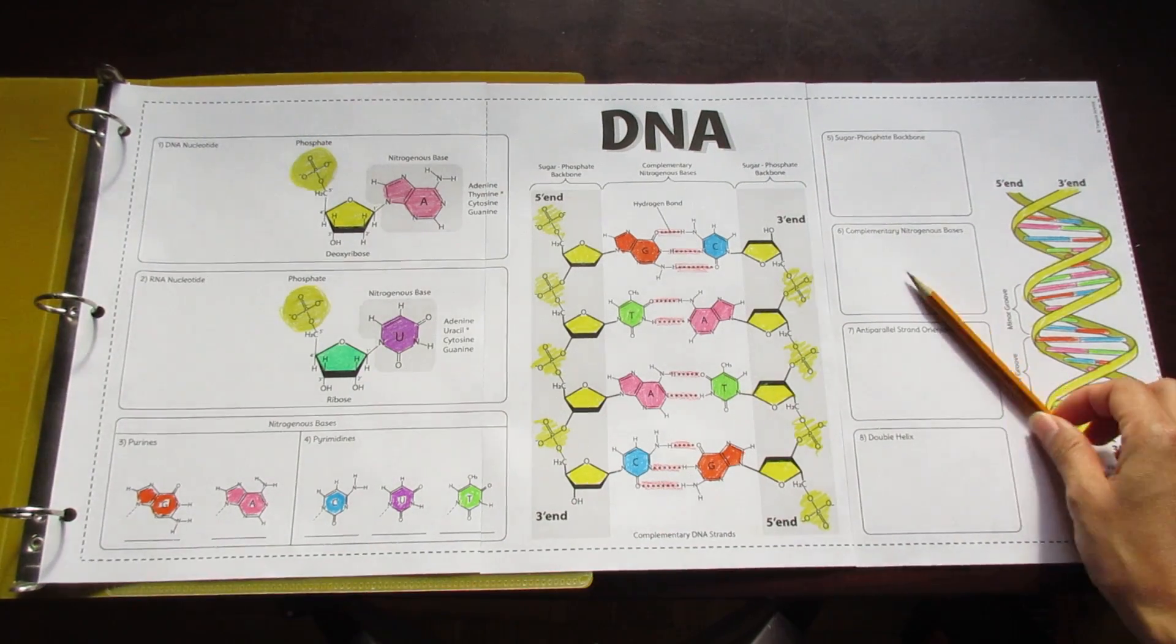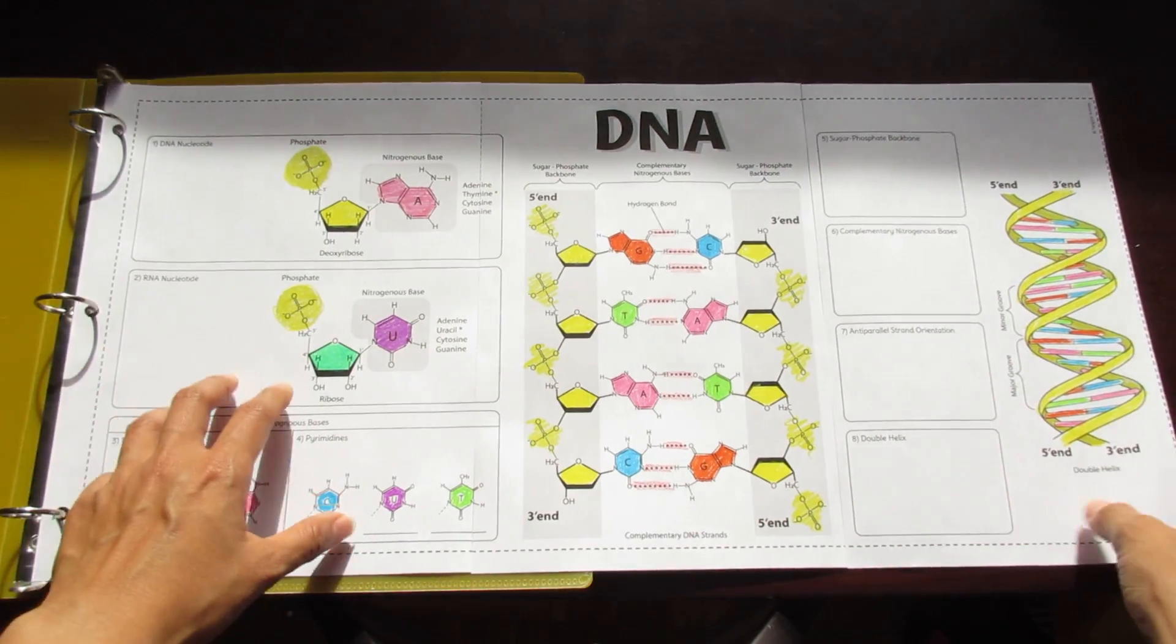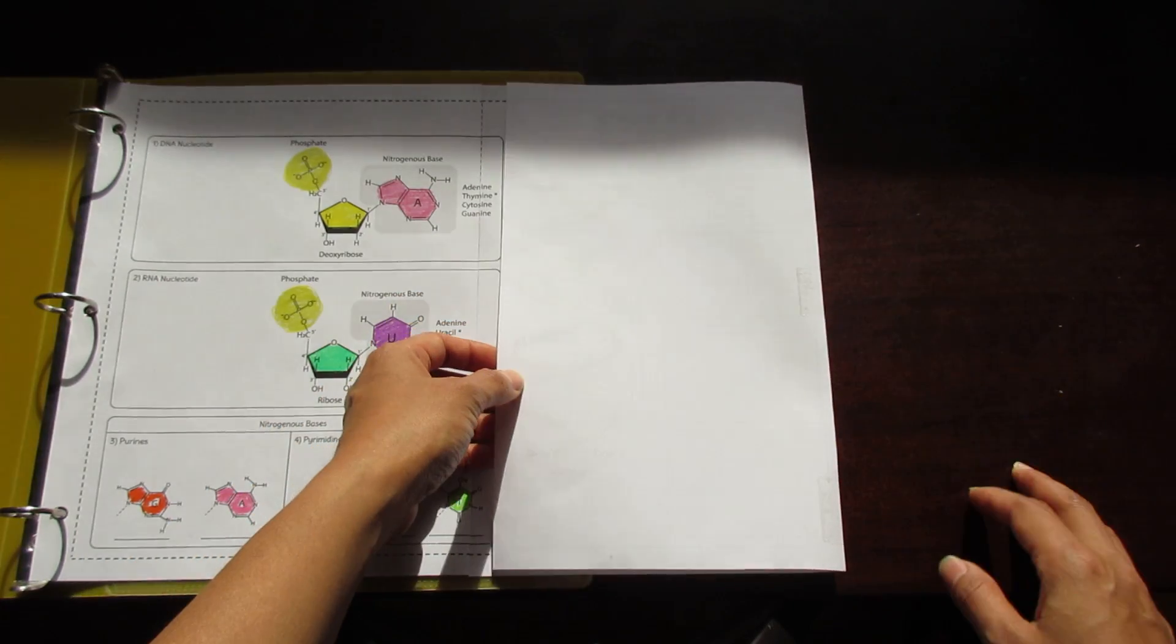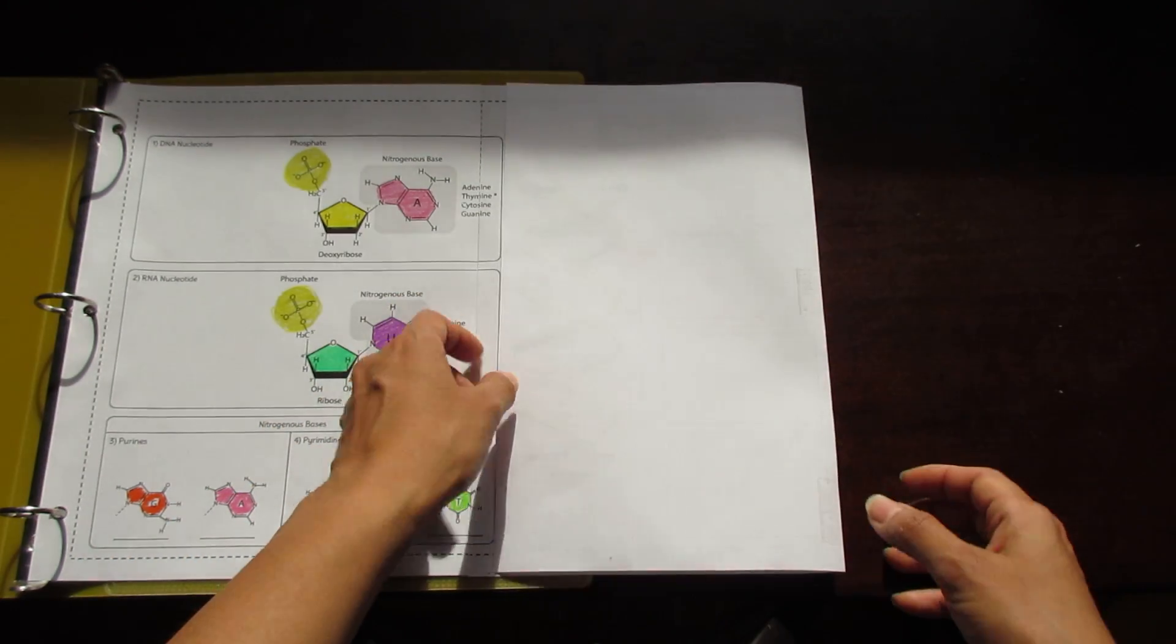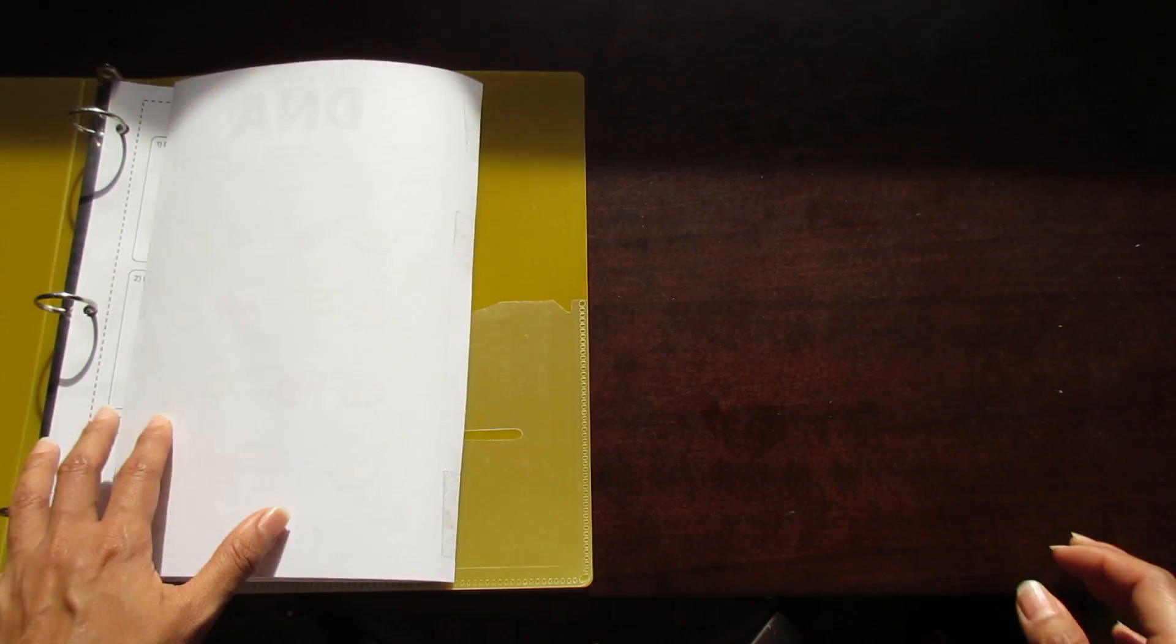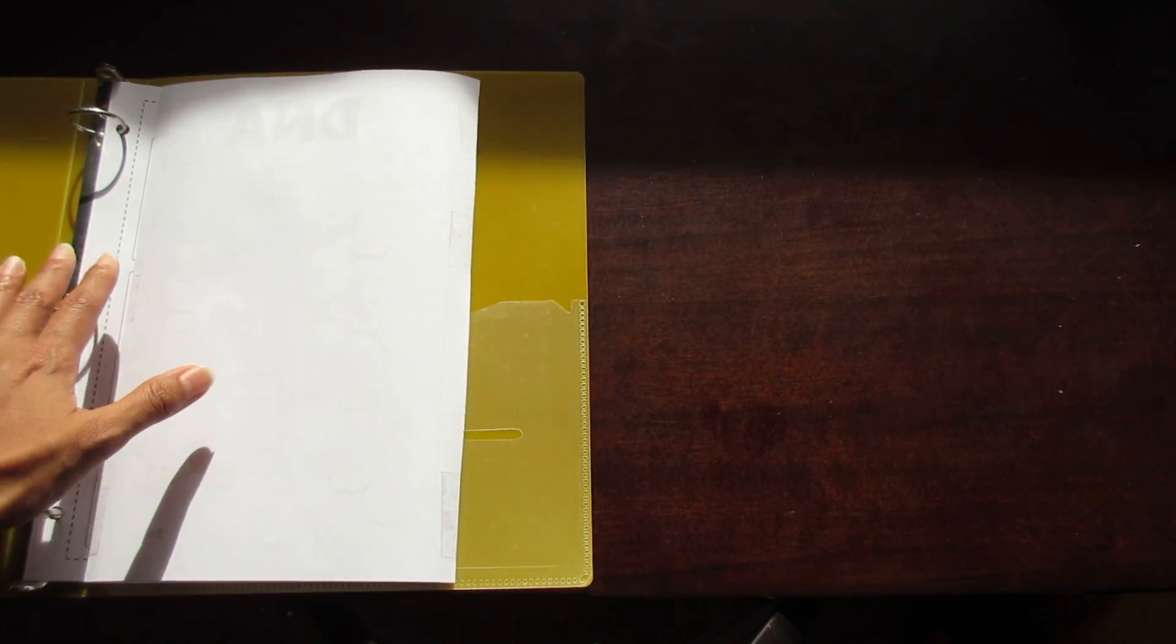This is the Big DNA foldable by Tang Star Science. Big in this case means three pieces of paper that when cut along the seams and taped, create a foldable that fits neatly into a binder without impeding the binder rings.